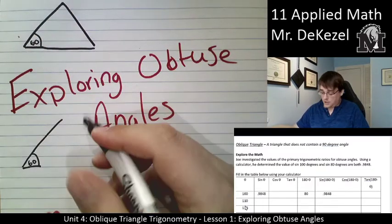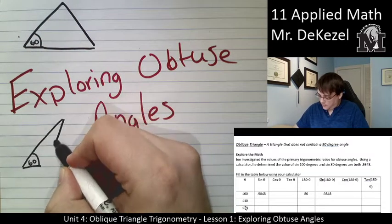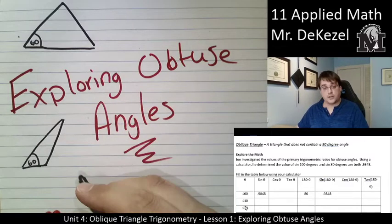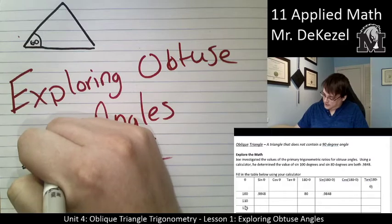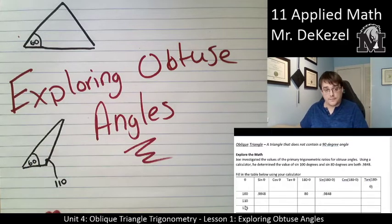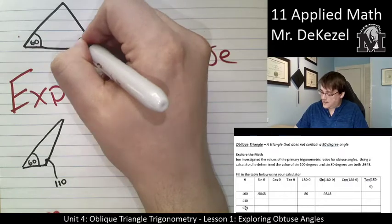It could. Or the triangle could look like this. If this is an angle here, 110. And this is the angle 70.